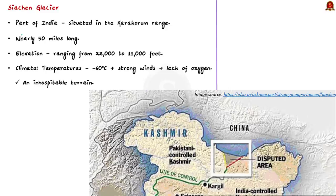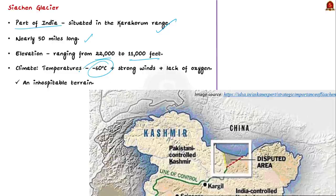Siachen Glacier is a part of India. It is situated in the Karakoram range of the northwestern Himalayas. It is nearly 50 miles long and ranges from 22,000 to 11,000 feet in elevation. It has temperatures as low as minus 60 degrees Celsius, plus strong winds and lack of oxygen. So it is also referred to as the world's third pole, and thus it is an inhospitable terrain.